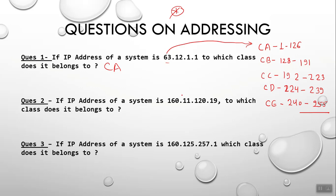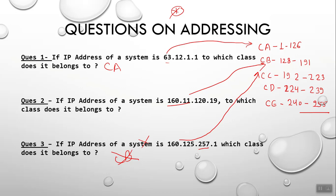If the IP address is 160.11.1.2, it belongs to Class B since 128 to 191 covers 160. Next, if the IP address is 160.1.125.257.1 — you might say Class B, but this question is invalid. The value 257 is out of range because each octet can only contain values from 0 to 255. So this IP address is wrong.